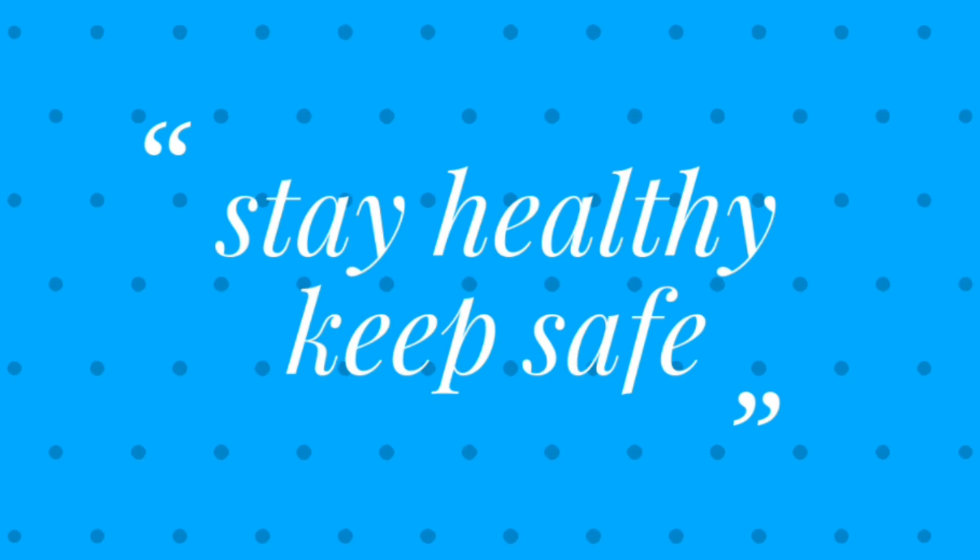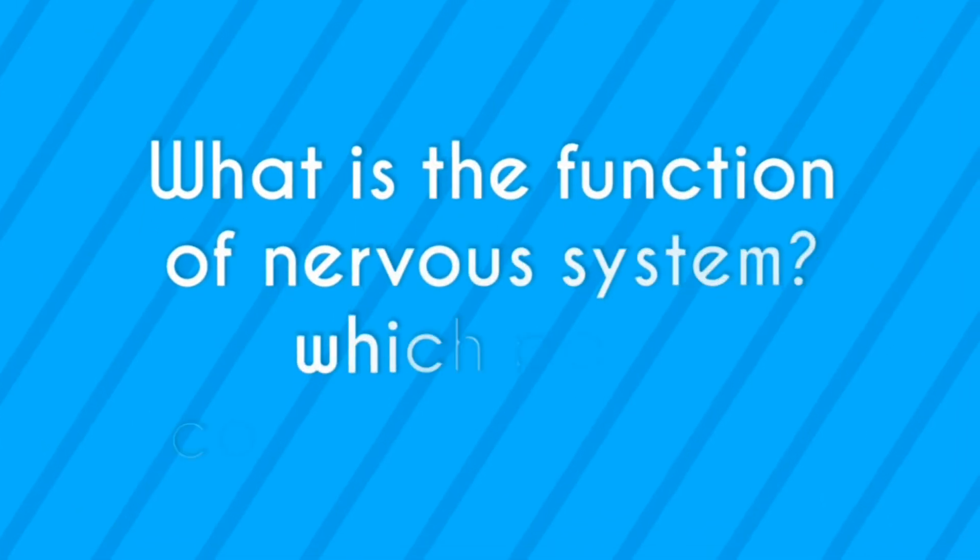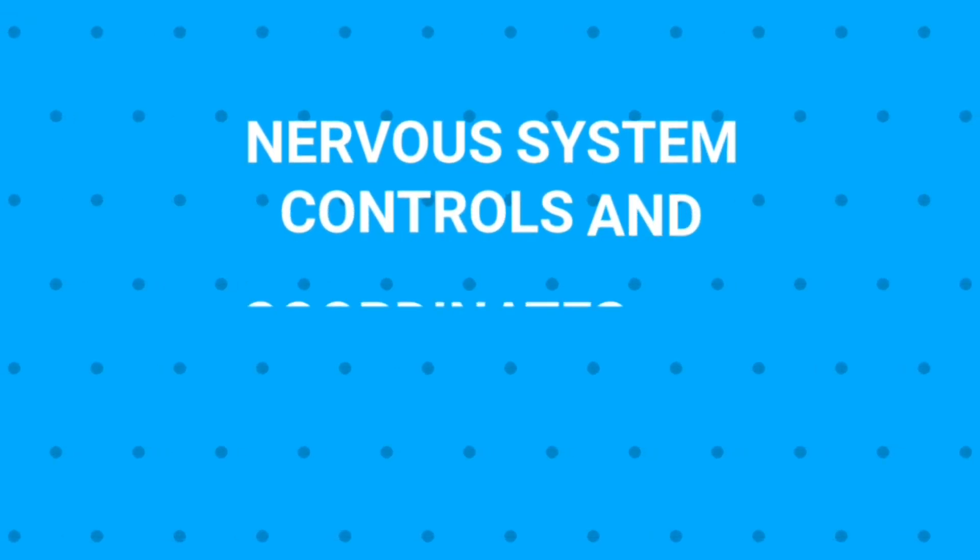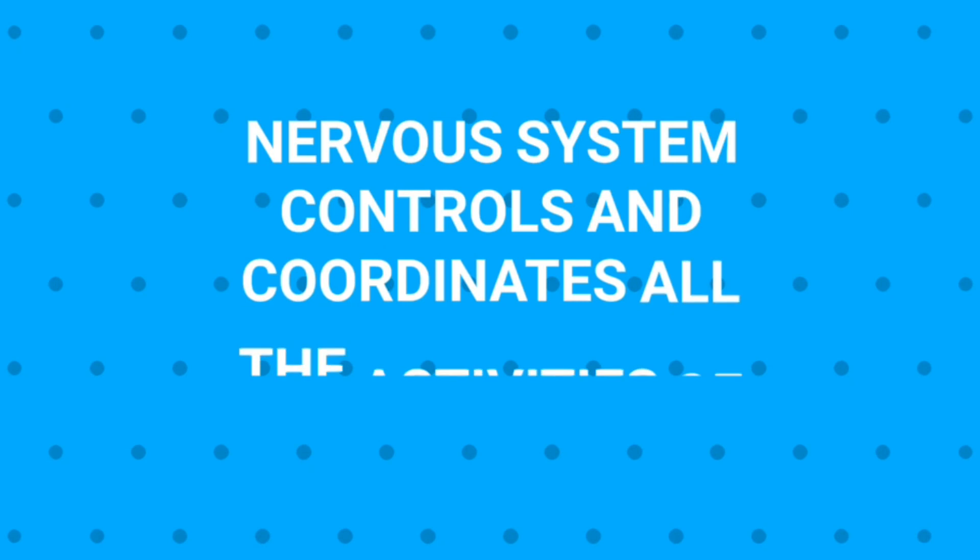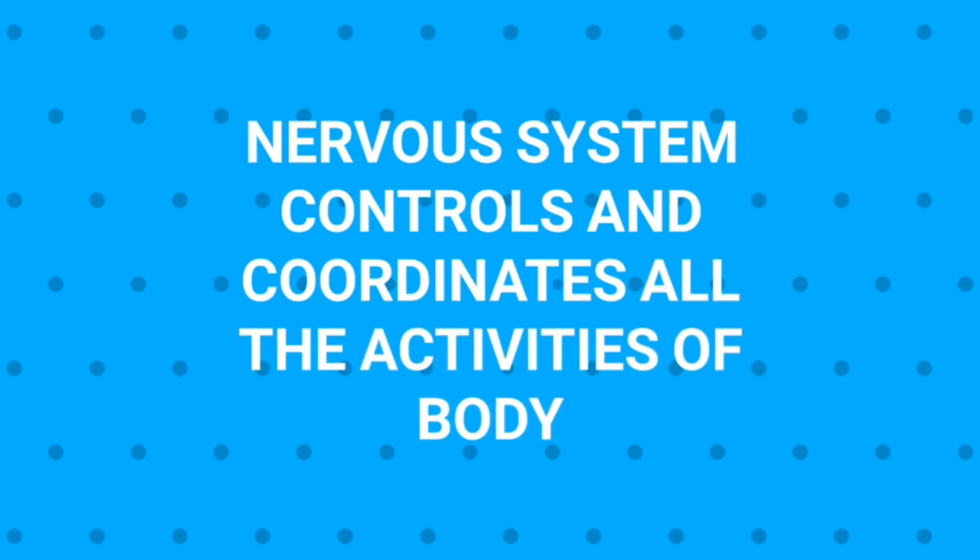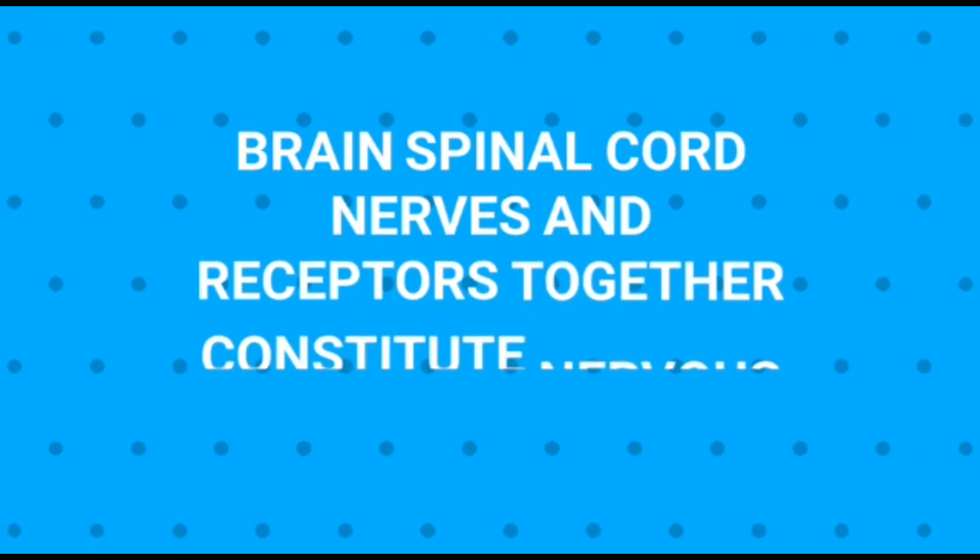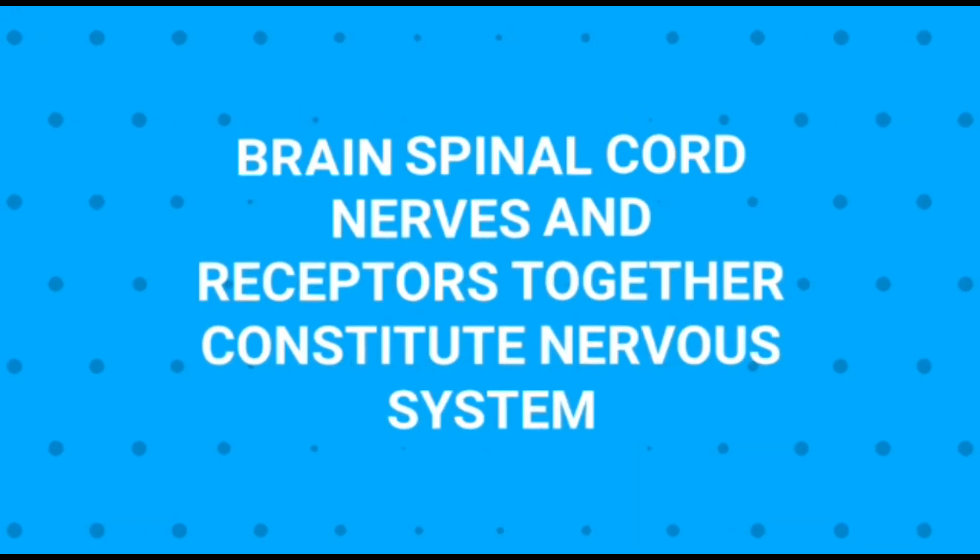Okay, let's start. Are you ready? Let me check your previous knowledge. What is the function of the nervous system and which parts constitute the nervous system? You know our nervous system controls and coordinates all activities of our body, and receptors, nerves, spinal cord, and brain constitute the nervous system.